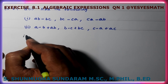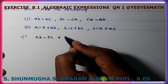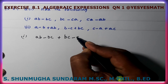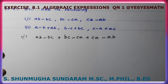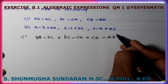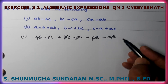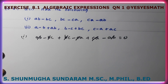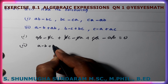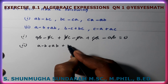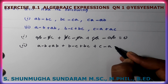First expression: AB minus BC, plus BC minus CA, plus CA minus AB. Now, AB plus AB gives minus AB. Minus CA plus CA. Minus BC plus BC. Plus BC, minus A plus AC.